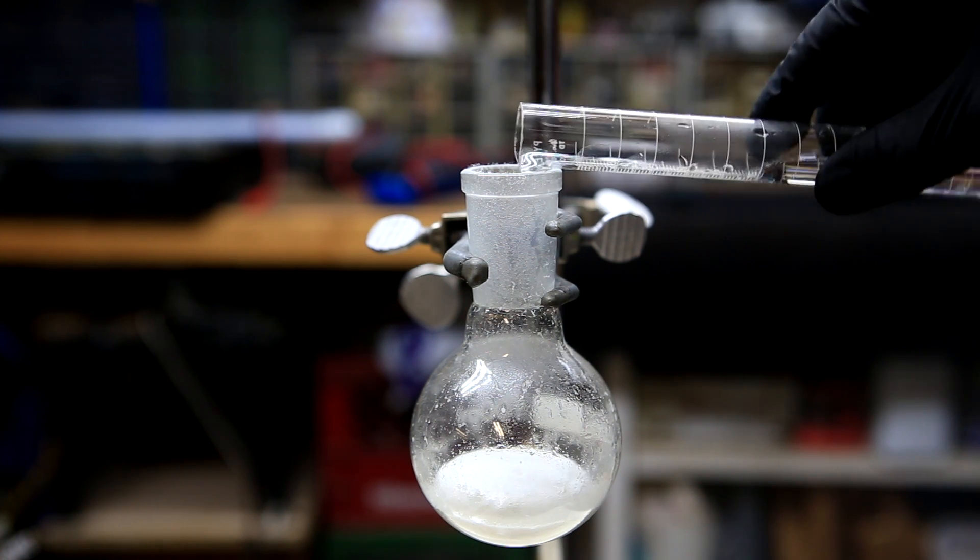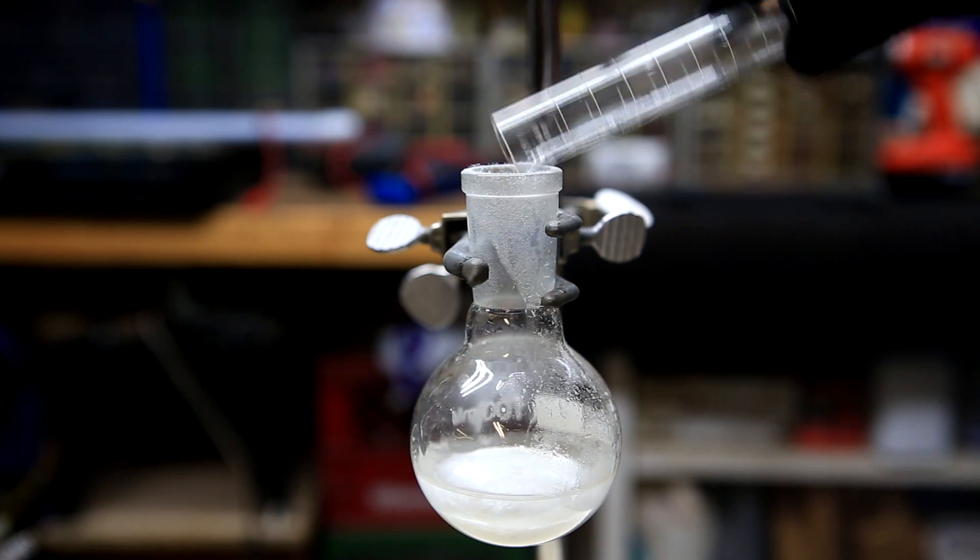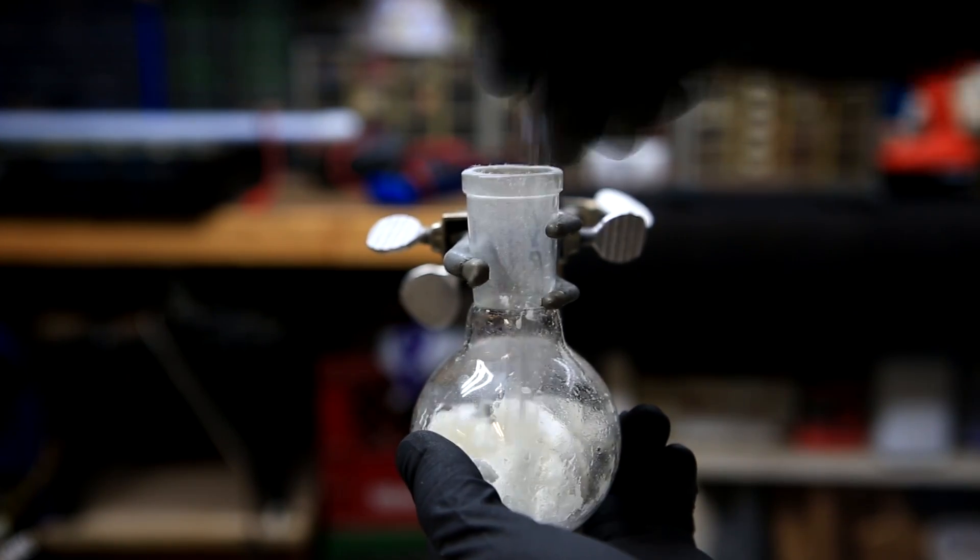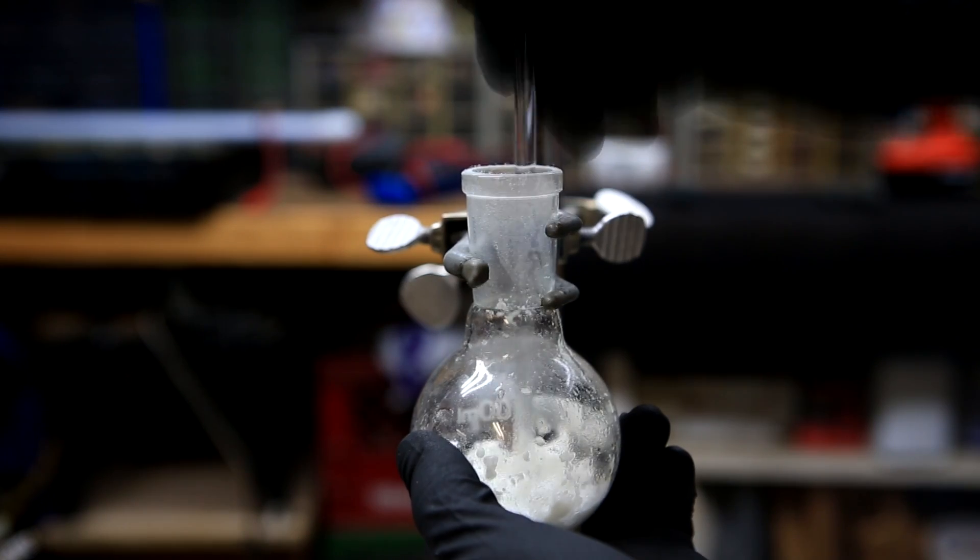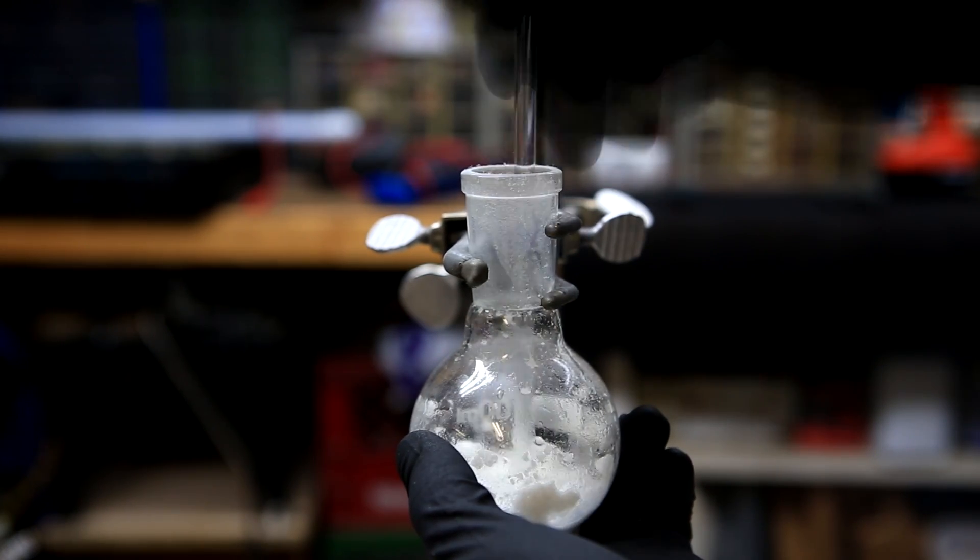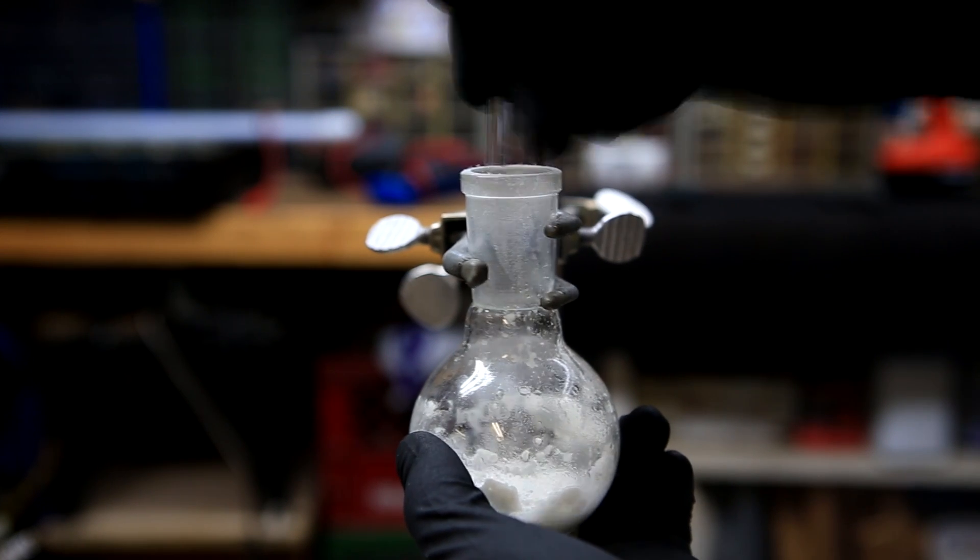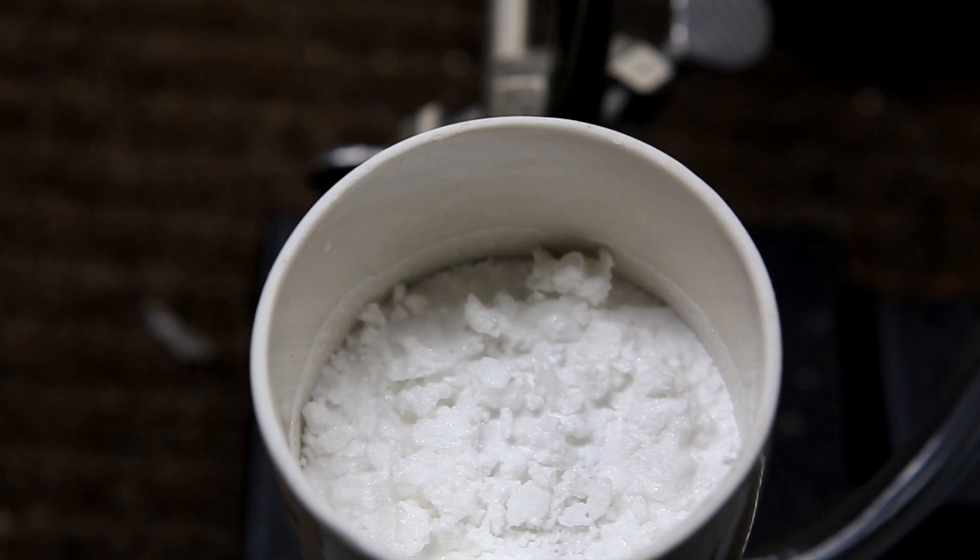10 milliliters of cold distilled water is then added. Using a glass stir rod the solids are broken up and mixed with the water as much as possible. What we're doing here is trying to dissolve any unreacted urea as phthalamide is almost completely insoluble in water. It is then vacuum filtered and dried under vacuum and we're left with our crude phthalamide.